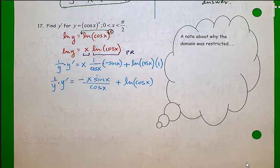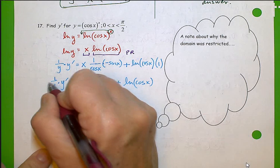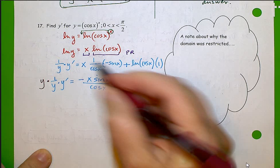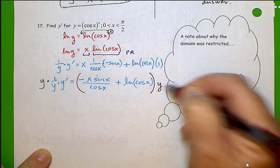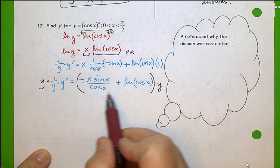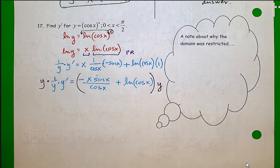Okay. Our next step is to solve for y prime. So I'm going to multiply by y on both sides. Remember, on the right-hand side, you're multiplying the entire right-hand side by y. So make sure you have parentheses in the right place.